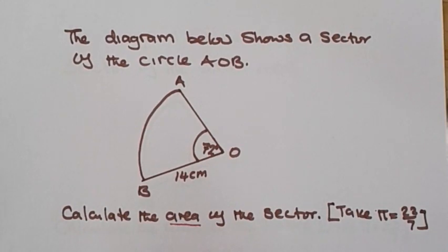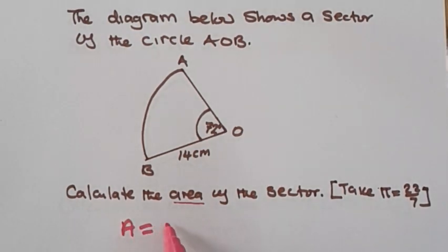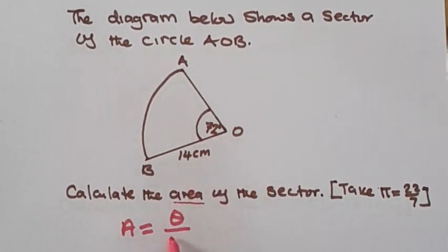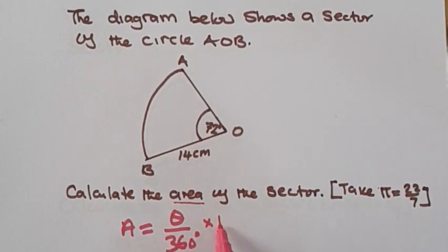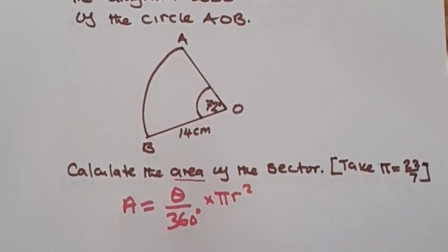we are going to use the formula for finding the area of a sector. The area of a sector is given by: Area = theta over 360 degrees, times the area of the full circle, which is pi r squared. So this is the formula for finding the area of a sector.